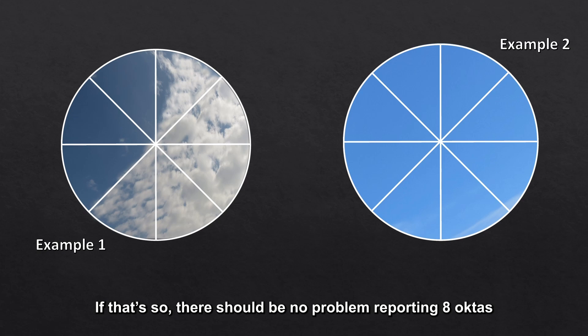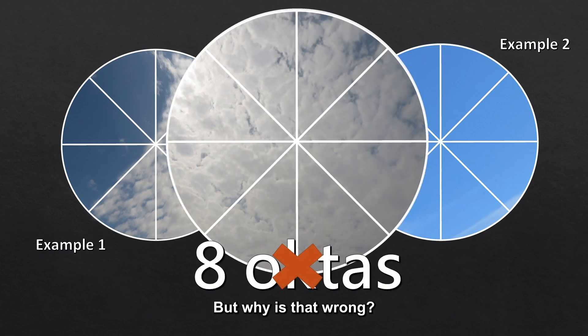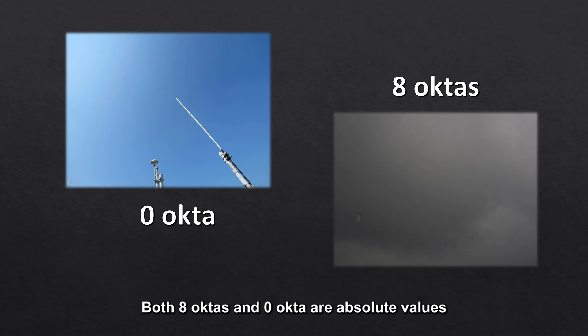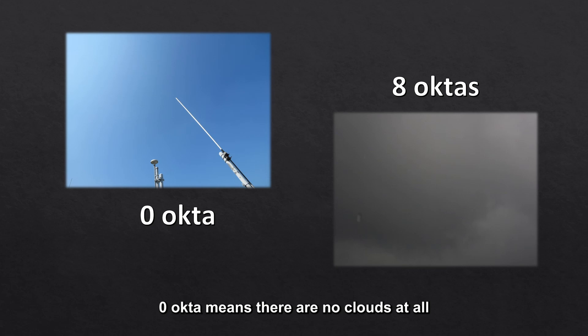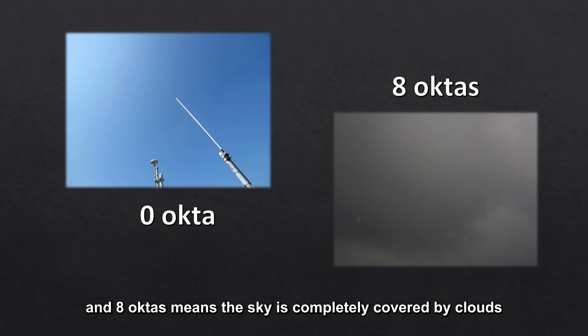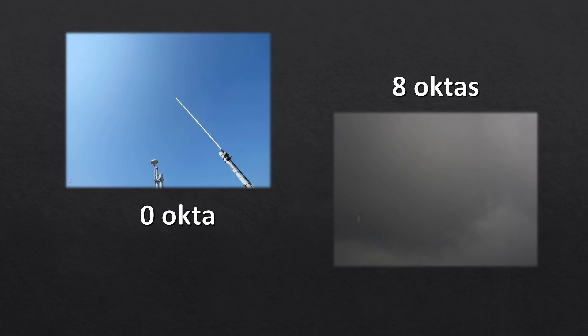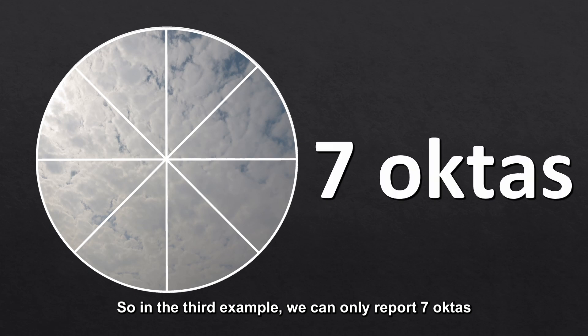If that's so, there should be no problem reporting eight octas. But why is that wrong? It's because everything has an exception. Both eight octas and zero octa are absolute values. Zero octa means there are no clouds at all, and eight octas means the sky is completely covered by clouds. Eight octas can only be reported if there are no breaks at all. So in the third example, we can only report seven octas.